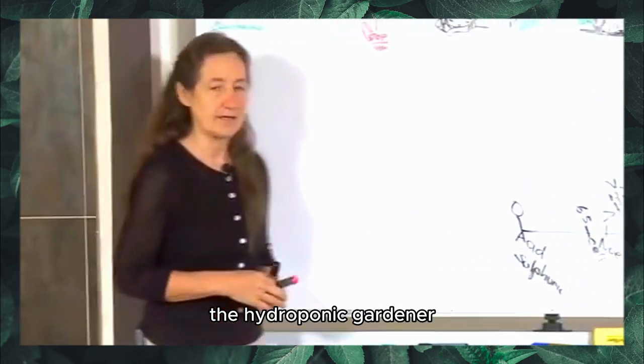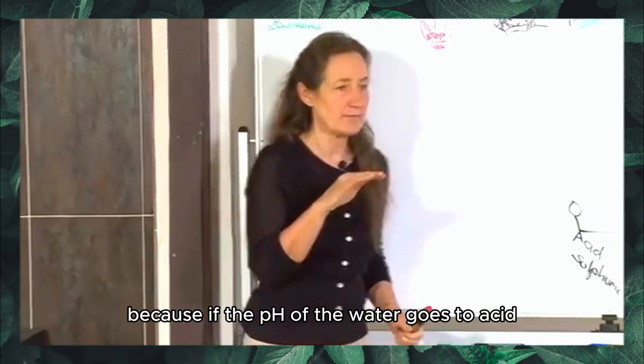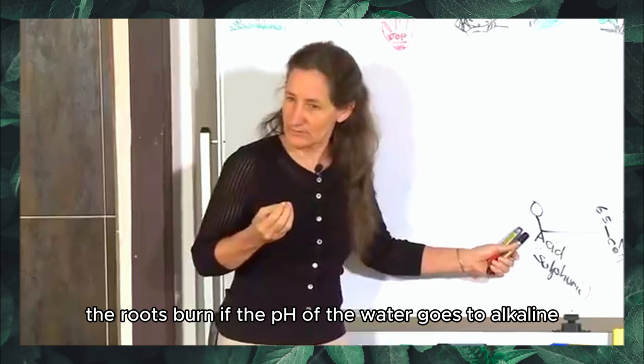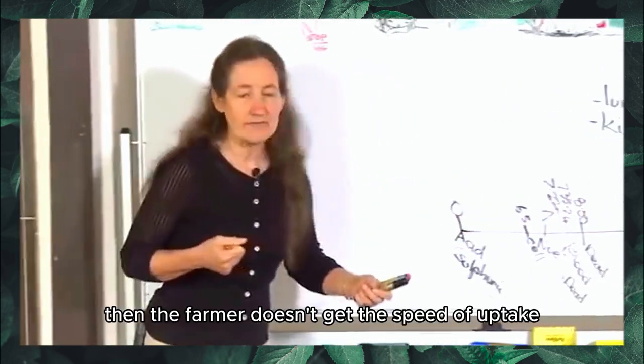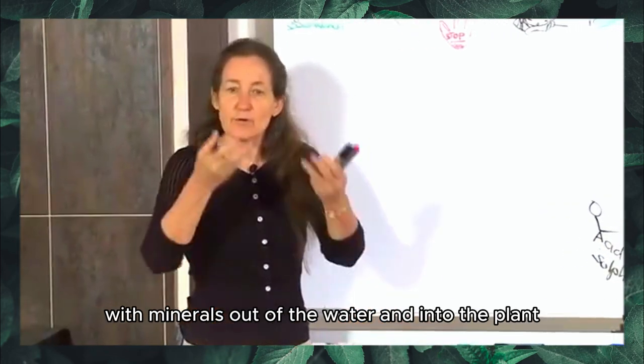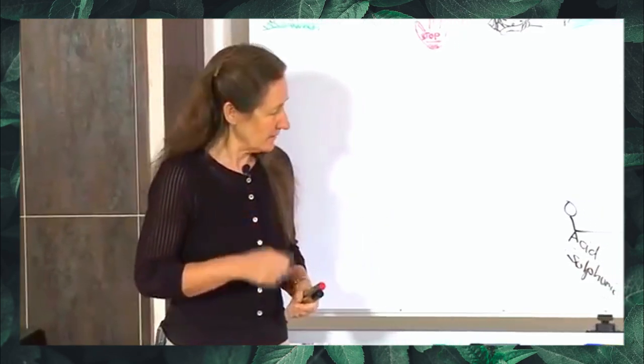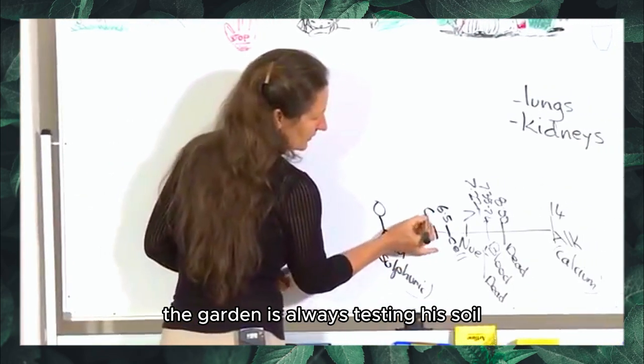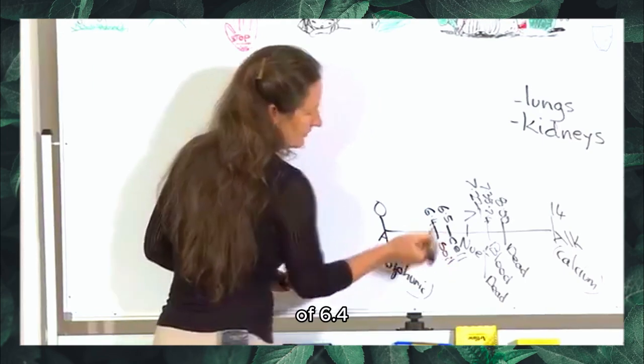The hydroponic gardener is constantly testing the pH of the water that his plants grow in because if the pH of the water goes to acid, the roots burn. If the pH of the water goes to alkaline, then the farmer doesn't get the speed of uptake of minerals out of the water and into the plant. You see, it's dependent on speed.